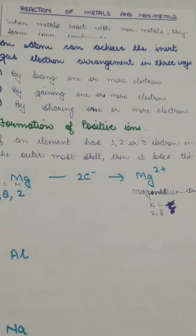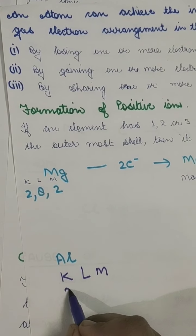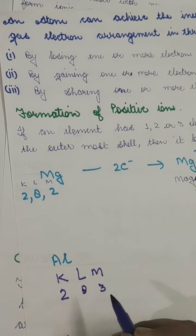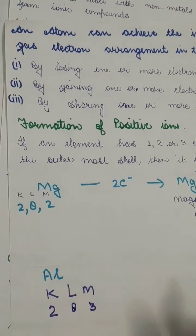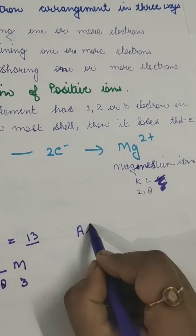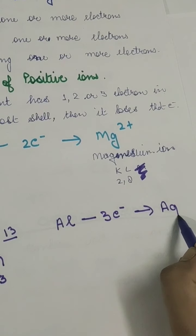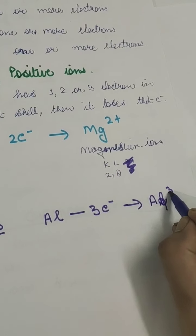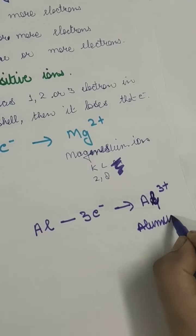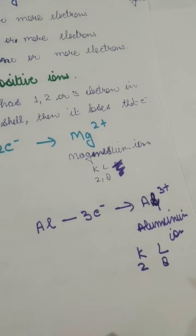Same in the case of aluminium. Aluminium has K, L and M shells: 2 electrons in K, 8 electrons in L, and 3 electrons in M, because aluminium has atomic number 13. This aluminium will donate its 3 electrons and will become a positive ion, that is a cation - Al³⁺. It will be the aluminium ion with only K and L shells: 2 electrons and 8 electrons.